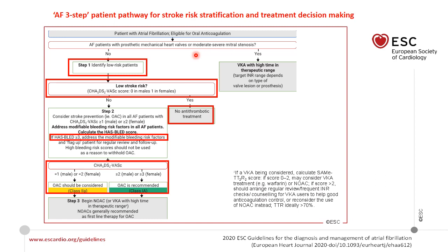This is a simple algorithm for the appropriate choice of oral anticoagulant in patients with atrial fibrillation. Patients with AF with concomitant significant mitral stenosis or mechanical prosthetic valves will be indicated for warfarin regardless of the CHA₂DS₂-VASc score, and NOACs are contraindicated in this population. If the patient does not have significant mitral stenosis and there is no history of prosthetic valve implantation, we calculate the CHA₂DS₂-VASc score.